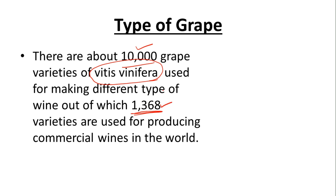These are the grape varieties you may have heard of, like Chardonnay, Pinot Noir, Riesling, Italian wine grape varieties, or Californian wine grape varieties — all these together come to 1,368 grape varieties.